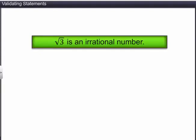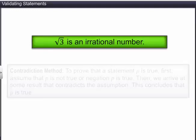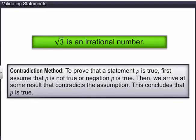Some mathematical statements cannot be proved directly. Such statements can be proved by the contradiction method. In the contradiction method, to prove a statement P is true, we first assume that P is not true — that is, the negation of P is true. We then arrive at some result that contradicts the assumption, which concludes that P is true.